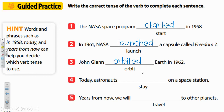So far we've had three past tense verbs. Let's look at number four. Today, astronauts blank on a space station. Today says it's happening right now, so that is the present tense. Our verb is stay. Stay is going to stay the same because it's already in present tense. Today, astronauts stay on a space station.